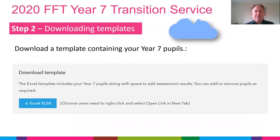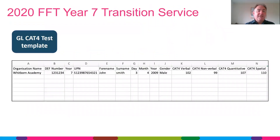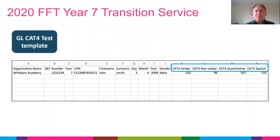Step two is to download the template — just click on the button here and the template will appear with your Year 7 pupils, and it will look like this. You've got some organisational information, some student information, and more importantly the space where you can input the four separate assessment outcomes for the Cat 4 tests.